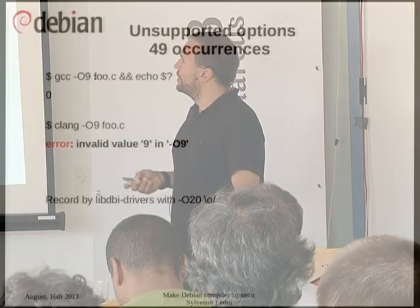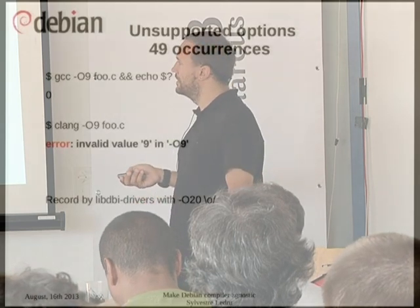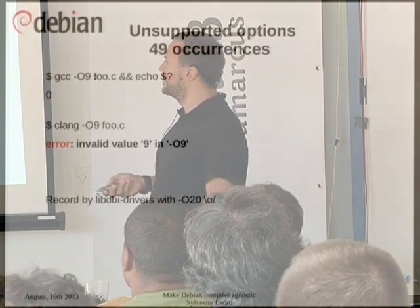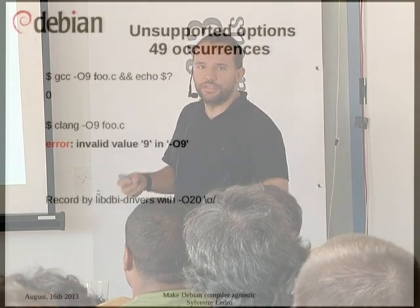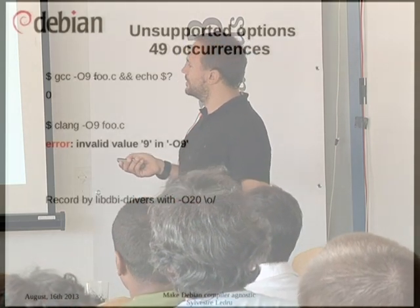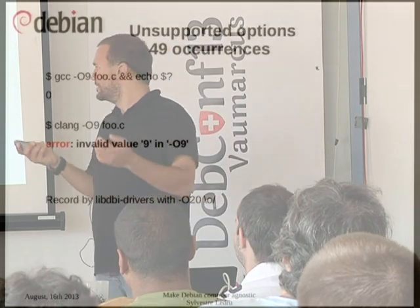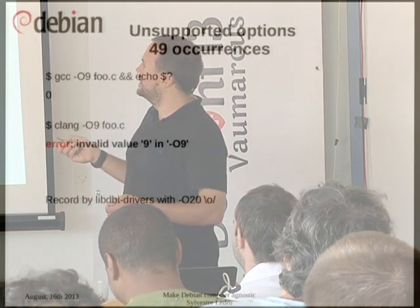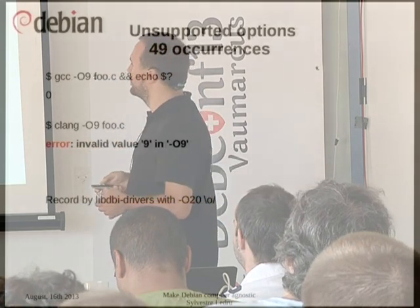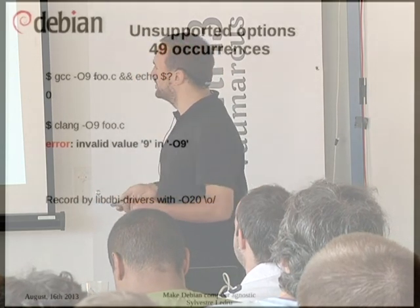There are some very common errors that we can find in the archive by rebuilding with Clang. This one is my favorite — some developers think that using -O something bigger than four will improve the quality of the generated code. The record is held by lib-dbi-driver with -O20. GCC accepts that without issue, I think they fall back to -O4, but Clang will use it as-is.